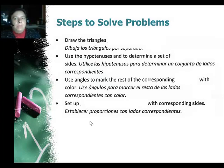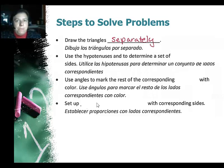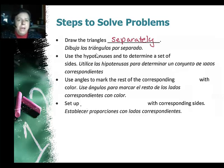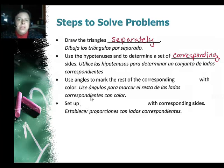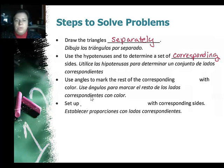Now, how do we solve problems that involve altitudes and right triangles? You really need to draw the triangles separately — don't try to figure it all out in one drawing. Use the hypotenuses to determine a set of corresponding sides, as those are easiest to pick out because they are opposite the right angles. If you can, color them so they all match, then use angles like the reflexive property to figure out which sides go with which sides.